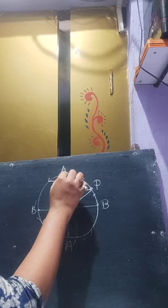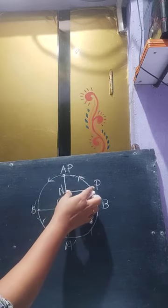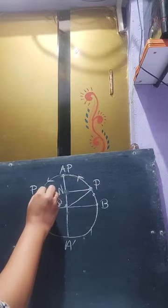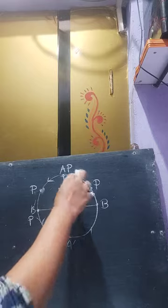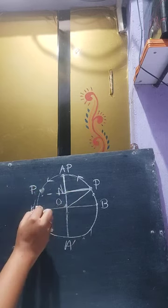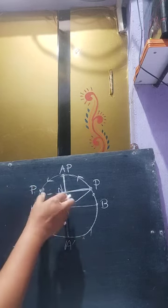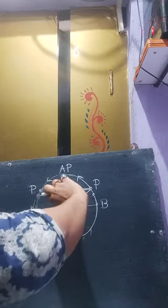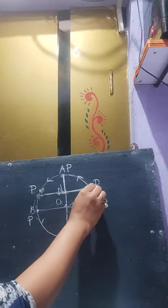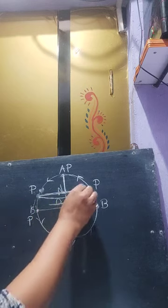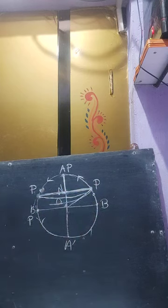When P comes to different positions around the circle, the projection PN moves back and forth. First this position, then this position — the projection moves like this, then comes back. This is nothing but a to-and-fro motion.